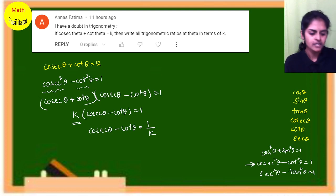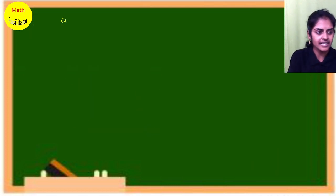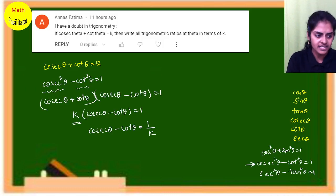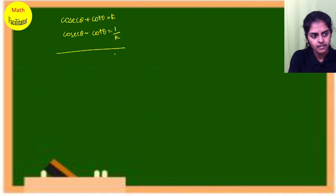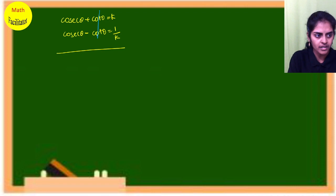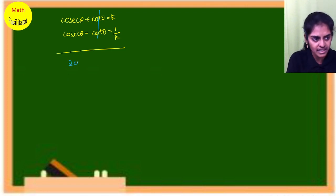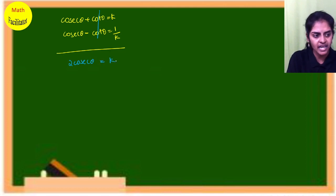So we have two equations: cosecant θ + cot θ = k (given), and cosecant θ − cot θ = 1/k (derived). This is just like solving a pair of linear equations — same concept. If we add these two equations, cot θ − cot θ cancels and we get 2 cosecant θ = k + 1/k.